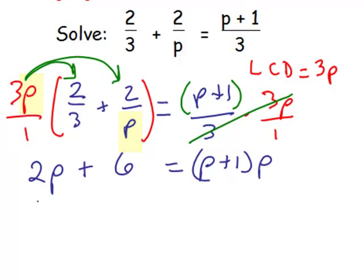So, let's take a look at what we have now. 2p plus 6 equals, I'm going to have to distribute here too, p squared plus p.